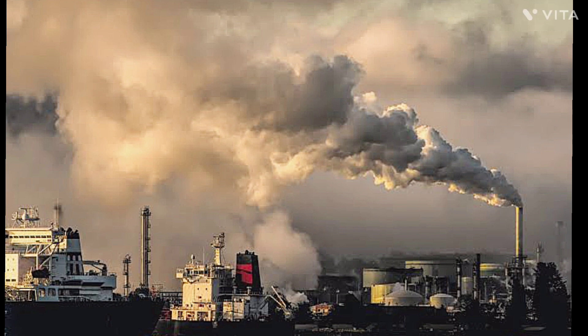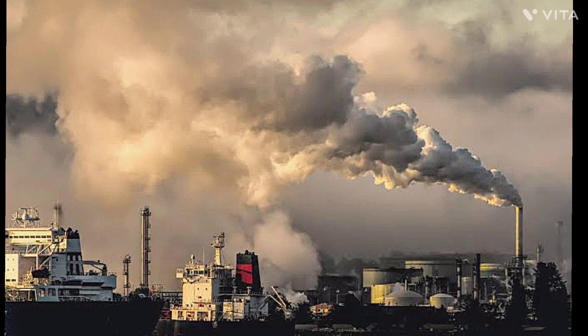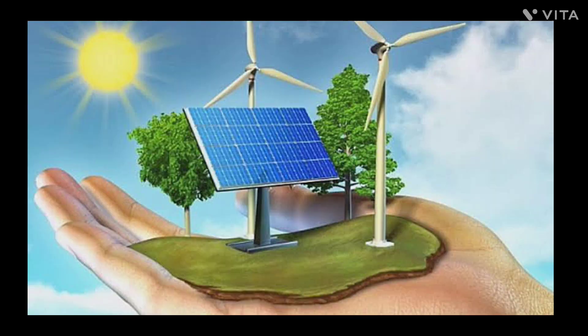Solar energy systems power plants do not produce air pollution or greenhouse gases. Using solar energy can have a positive indirect effect on the environment when solar energy replaces or reduces the use of other energy sources that have larger effects on the environment.